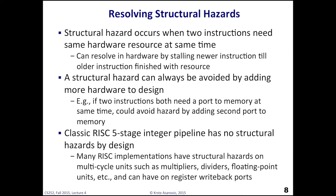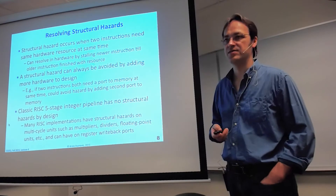One of the nice things about the classic RISC five-stage pipeline is that the instruction set and the pipeline were designed so there are no structural hazards by design — no two instructions at different stages can compete for the same resource. That's by design in the classic five-stage RISC, so you don't need any logic to check for it. However, if you start adding more functional units — like a multiply, divider, or floating point — you can start having structural hazards. For example, if a multiplier takes 16 clock cycles and a second multiply instruction comes along, you'll have a structural hazard.